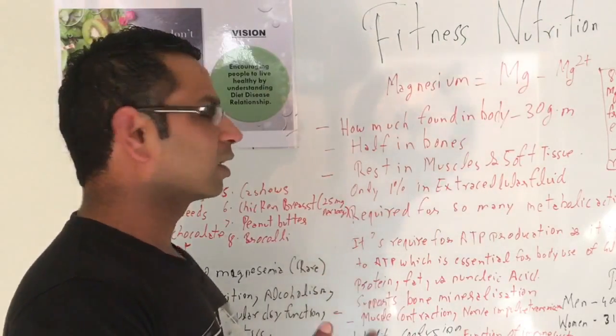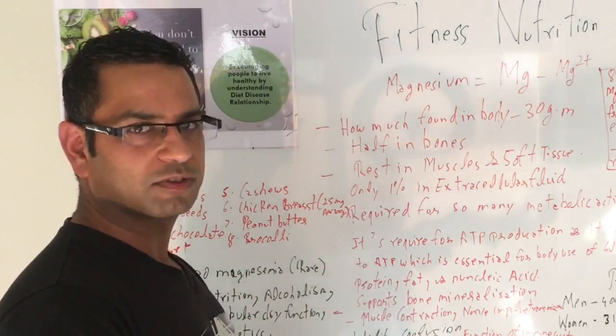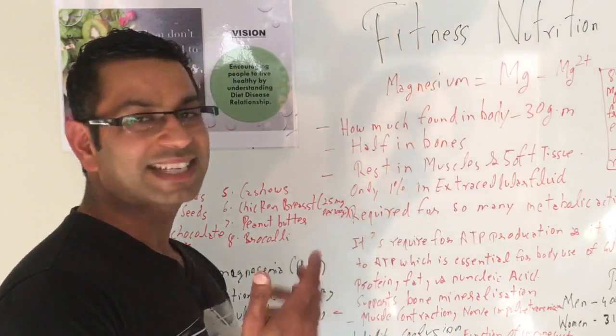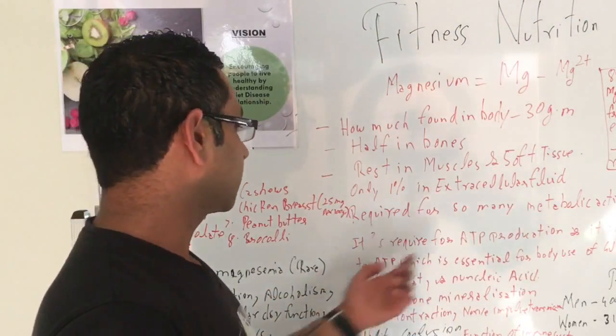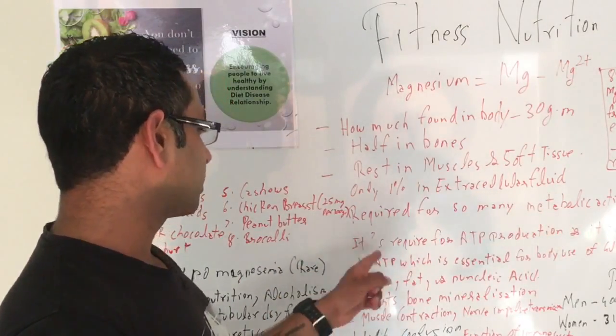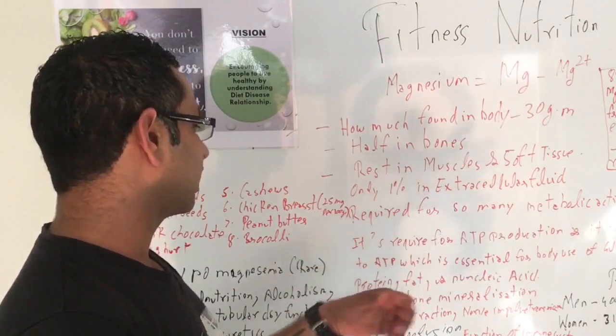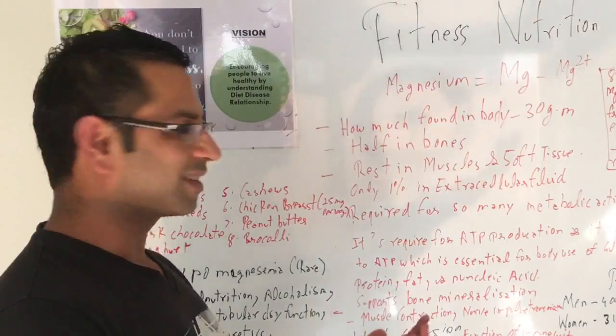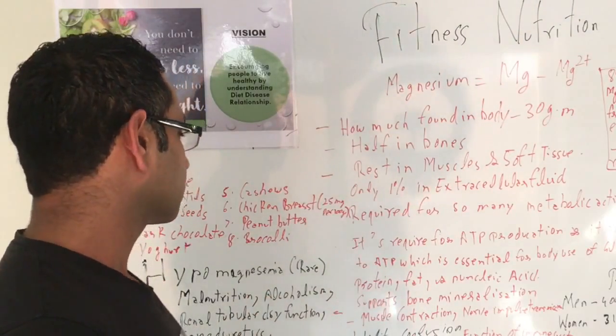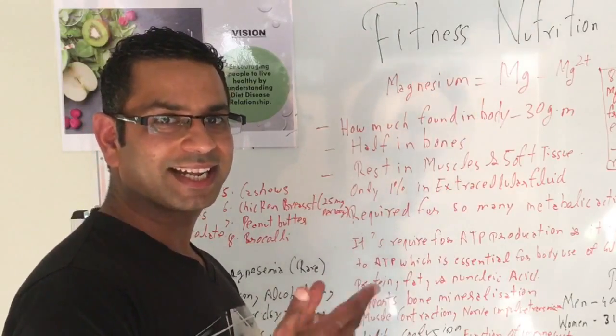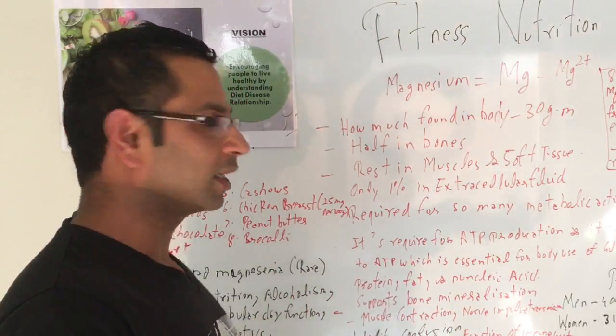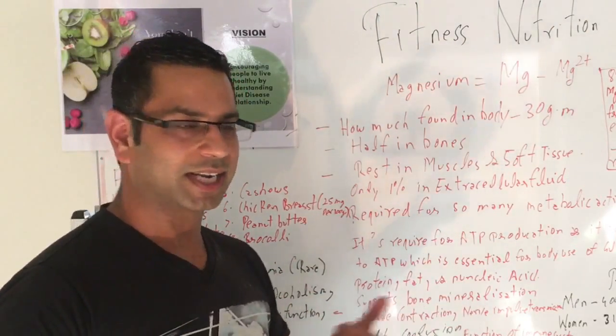ATP stands for adenosine triphosphate - it has three molecules of phosphate. What magnesium does is it adds the last phosphate, which completes the cycle and can provide us with glucose and synthesis of protein, fat, and nucleic acid. The nucleic acid is DNA and RNA, so it helps in the making of DNA and RNA as well.